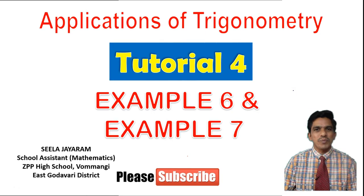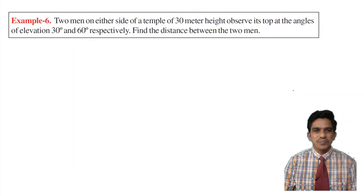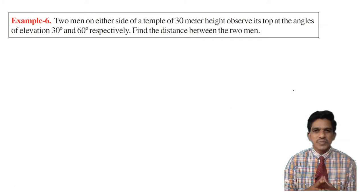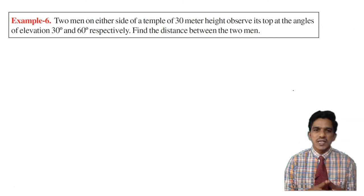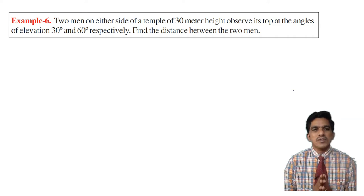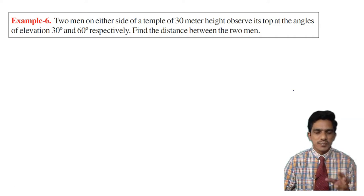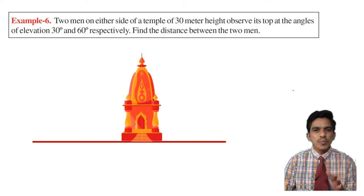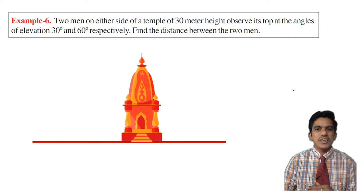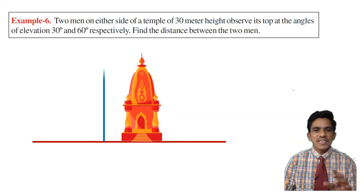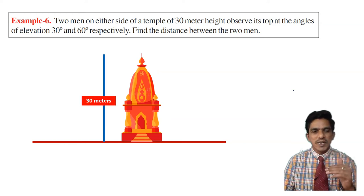Let us look at Example 6. Two men on either side of a temple of 30 meter height observe its top at angles of elevation 30 degrees and 60 degrees respectively. Find the distance between the two men. So here we have a temple and there are two men on either side. The height of the temple is given as 30 meters.